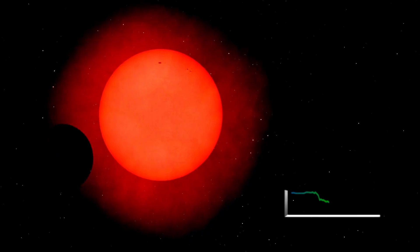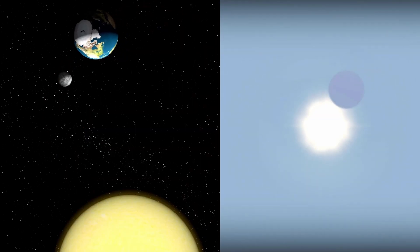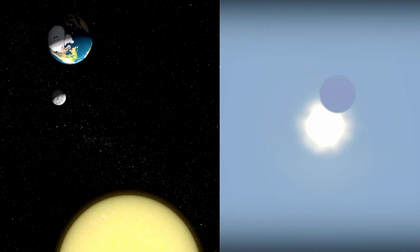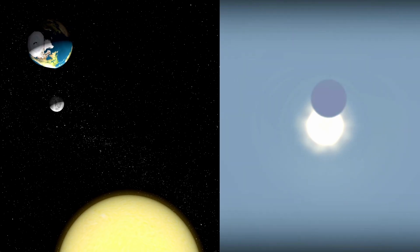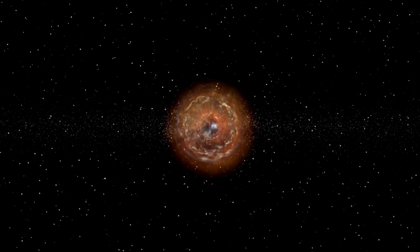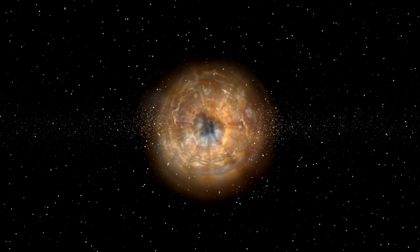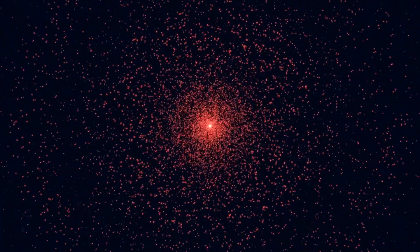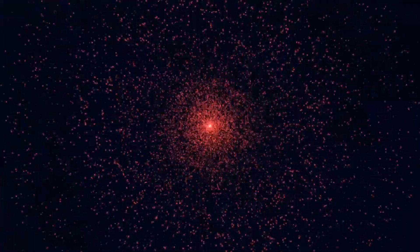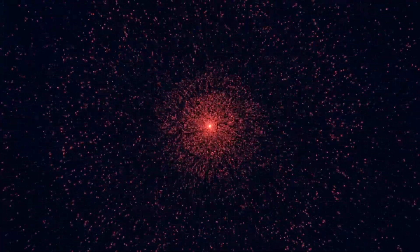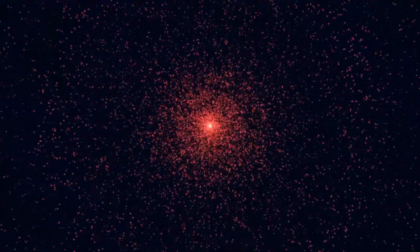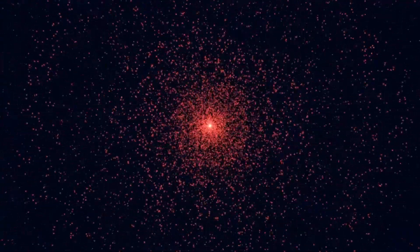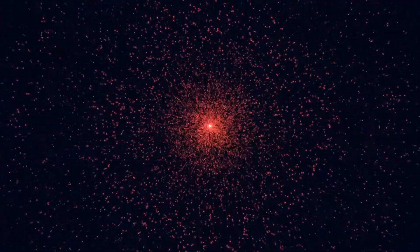Suddenly, 3i Atlas wasn't a comet anymore. It was a mystery, perhaps even a message. The implications were staggering. If true, it meant we were no longer looking at a rock from another system. We were looking at a living system. Or worse, a constructed, intelligent one. The difference between a comet and a probe could change how we see the universe forever. And that change was just beginning, because the next thing China observed didn't just suggest life. It challenged our definition of what life could be.